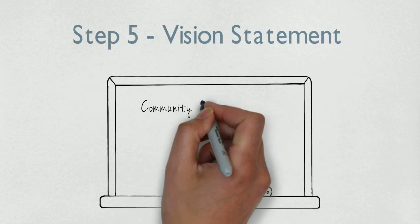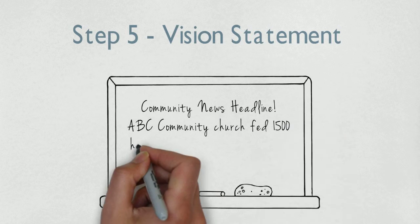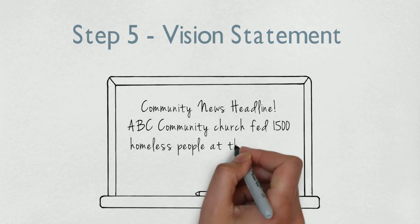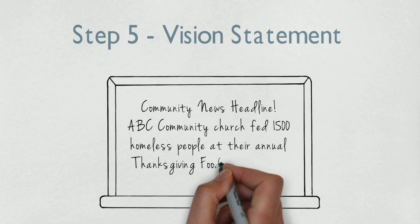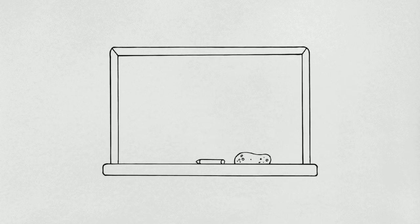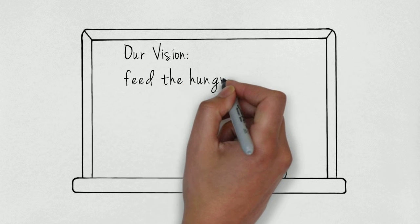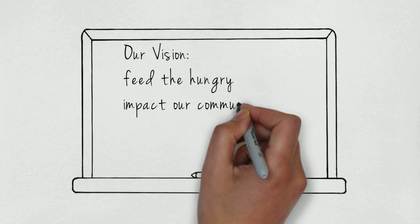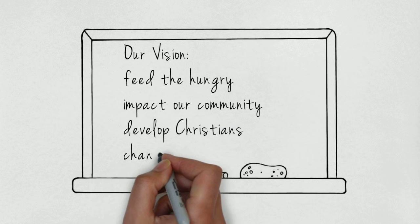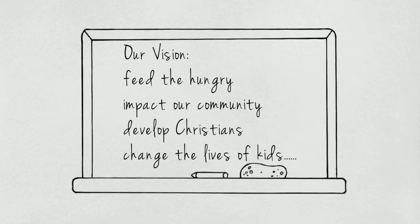Step number five: create the vision statement. Create a newspaper headline that articulates something the church has accomplished at some point in time — this step helps the group visualize the future. Combine all of the thoughts and ideas and begin to create the vision statement. Do not spend time making it a perfect sentence; focus on the message. Allow all participants to add or subtract words and begin to form the sentence structure. Have a laptop available to use a thesaurus and dictionary as references.